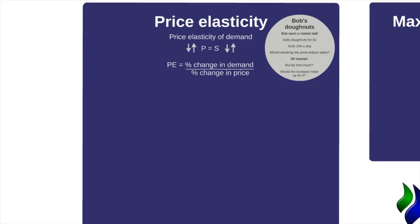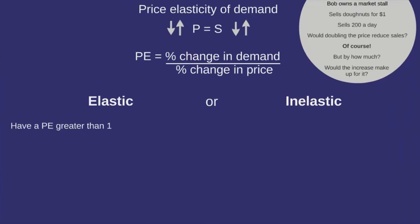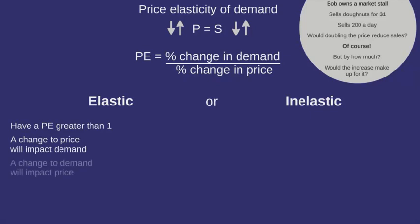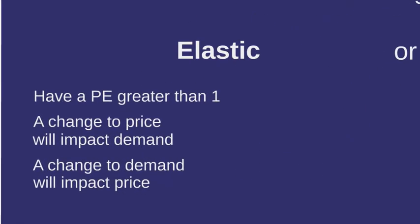Price elasticity is calculated by taking the change in demand and dividing it by the change in price. It can be elastic — where there is a change in demand when there is a change in price — or inelastic — where there is not a change in demand when there is a change in price. Elastic is when the price elasticity (PE) is greater than one, meaning a change in price will have a significant impact on demand. Inelastic is when the PE is less than one, where a change in price will not significantly impact demand.